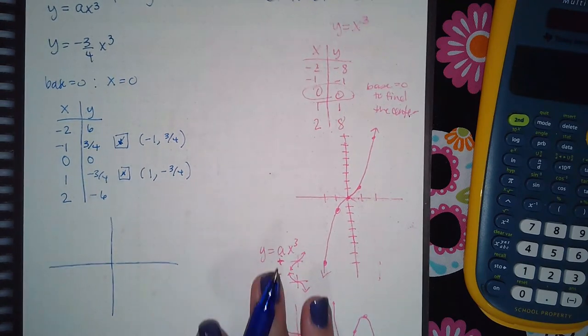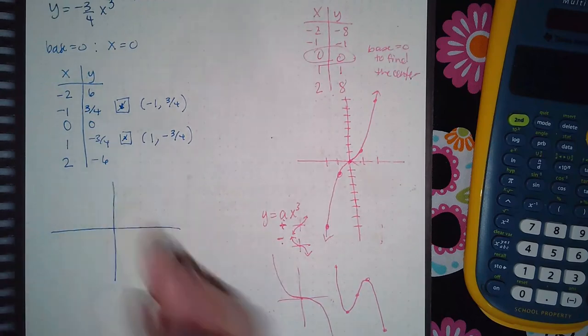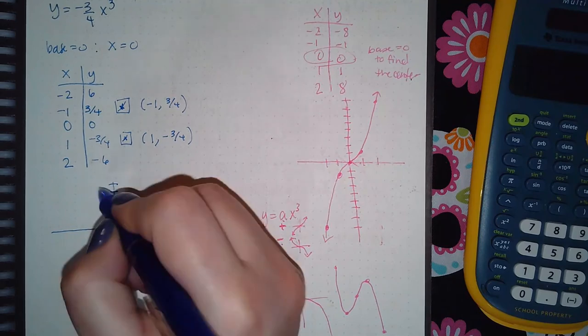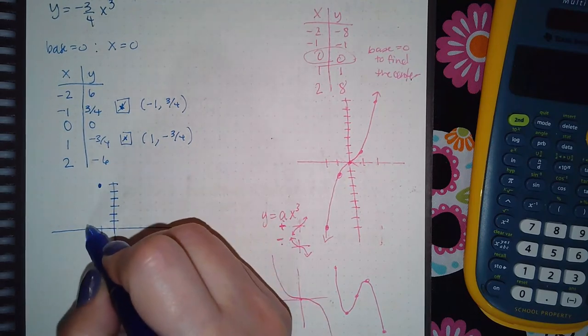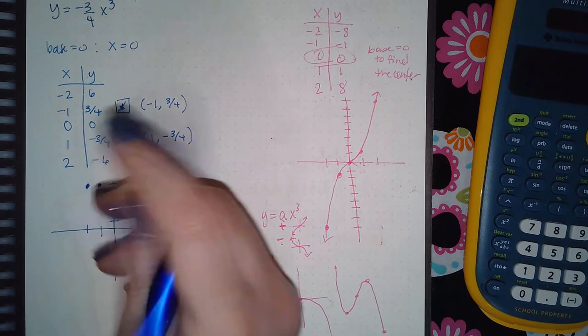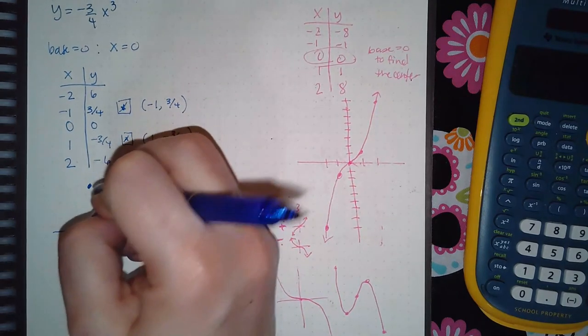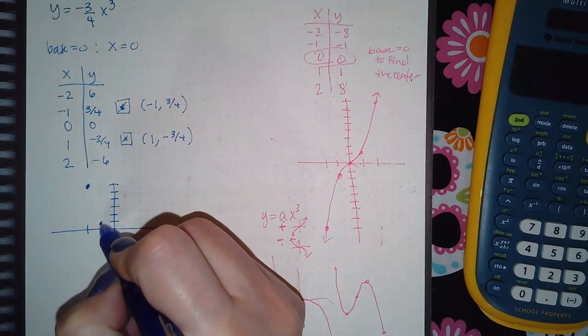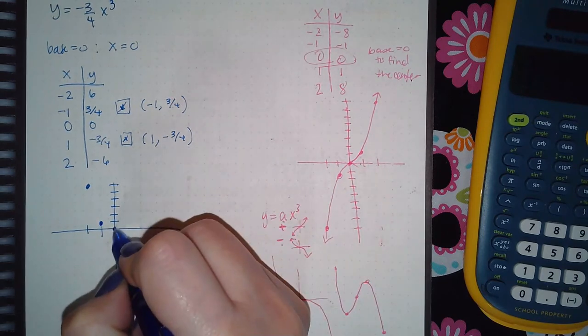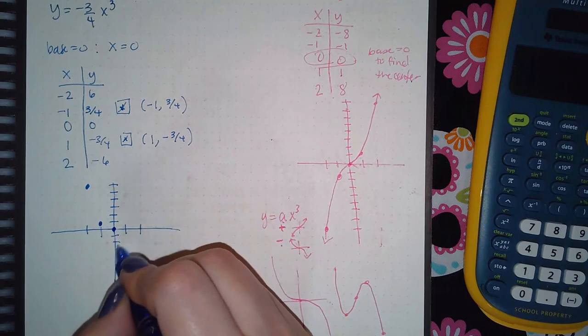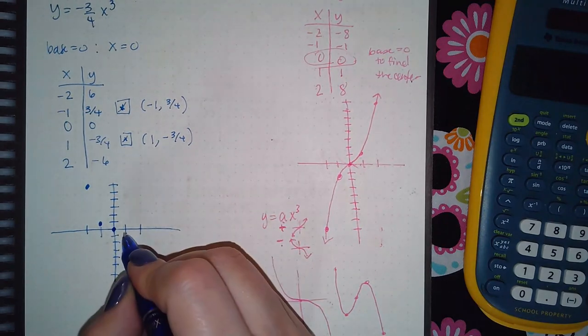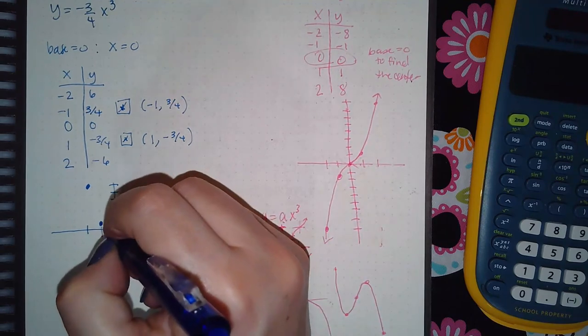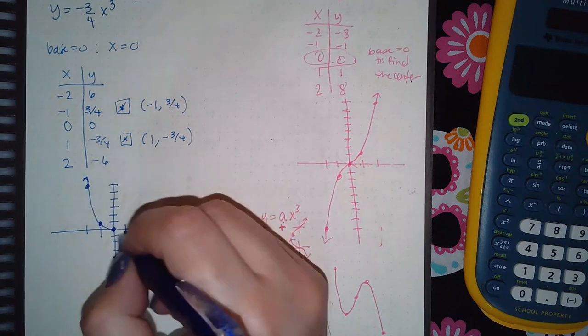So if I graph this on paper, because I'm not in ALEX in this video: negative two and one, two, three, four, five, six is here. Negative two and positive six is there, and then negative one and positive three-fourths is about right here. Zero and zero. One, two, one, two, three, four, five, six, so that one's probably about right there, and then this one is down here.